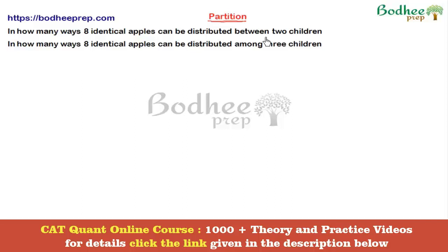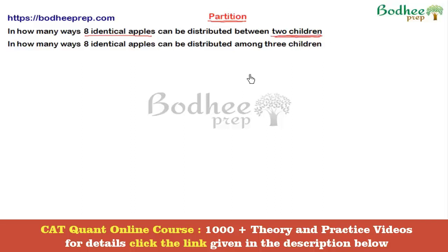To understand that method, let us first take things from the very basics and solve the first question without using that method, because it is too rudimentary and can be solved without any formal method. It is very simple. The question says: in how many ways can eight identical apples be distributed between two children? The two children will obviously be different, and no other information is given.